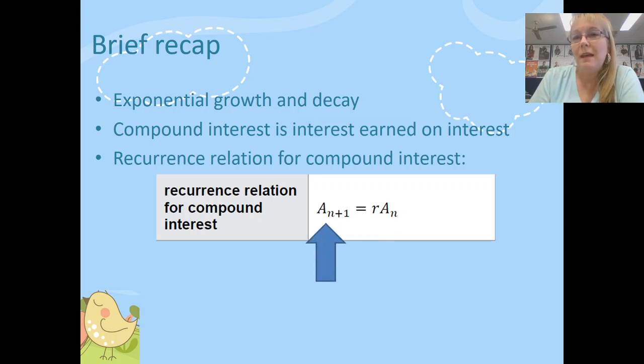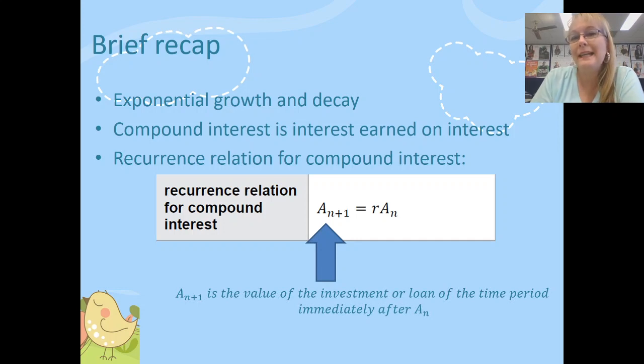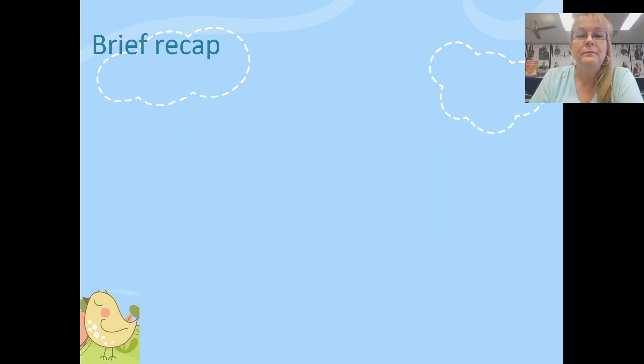A with the subscript n plus 1 is the value of the investment or the loan of the time period immediately after A_n. So if the time was 30 years then A_{n+1} would be 31 years. Something very important to note with recurrence relations for compound interest that A at time 0 is the principle. This is the money that we start with.